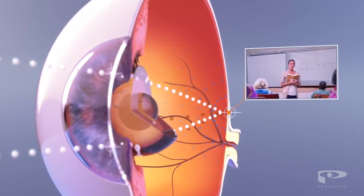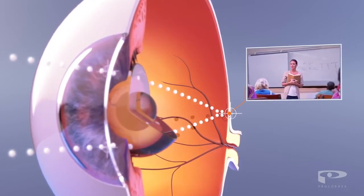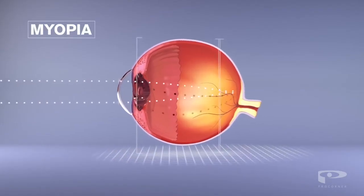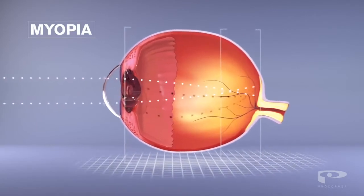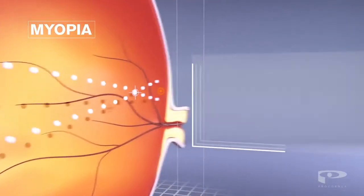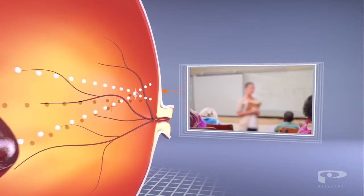In the case of myopia or nearsightedness, the eye grows too long. Light then focuses on the front of the retina, after which it disperses, causing distance vision to become blurred.